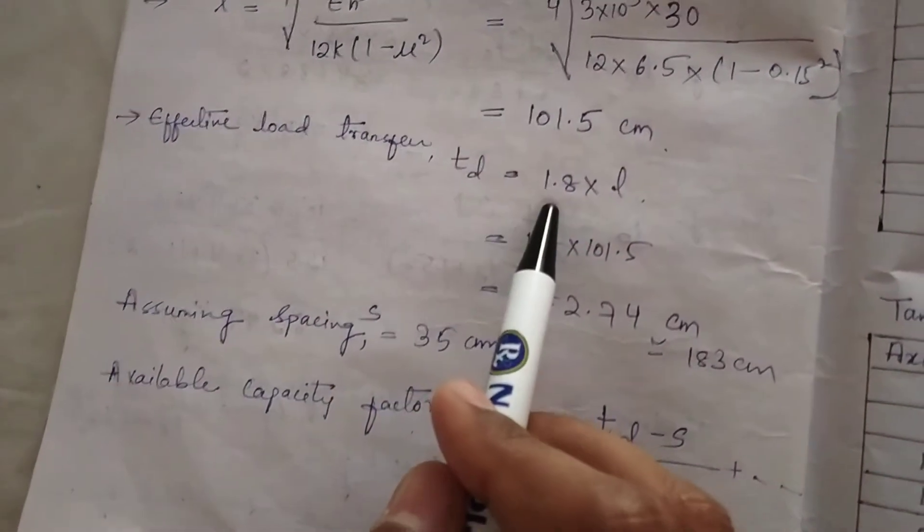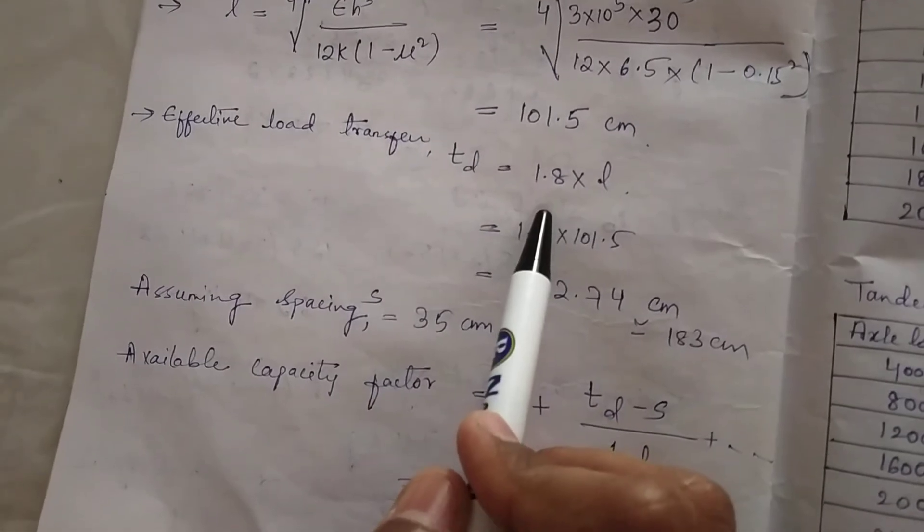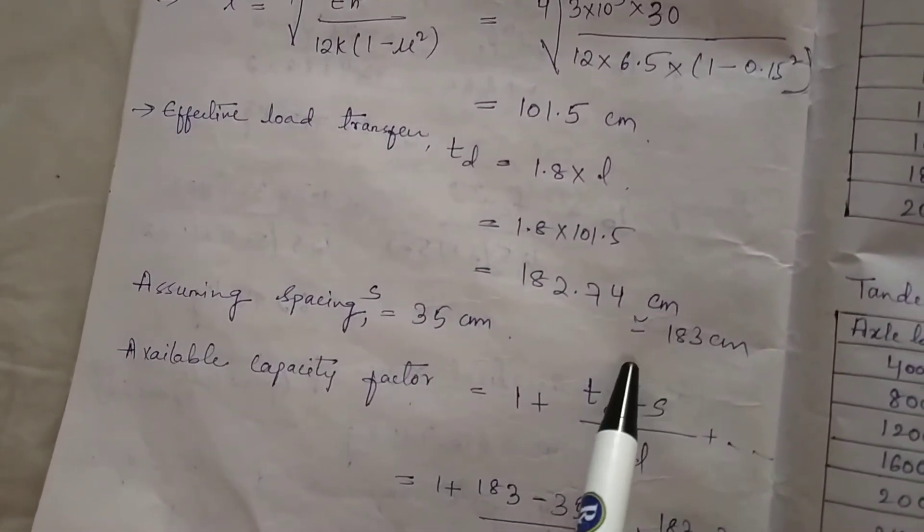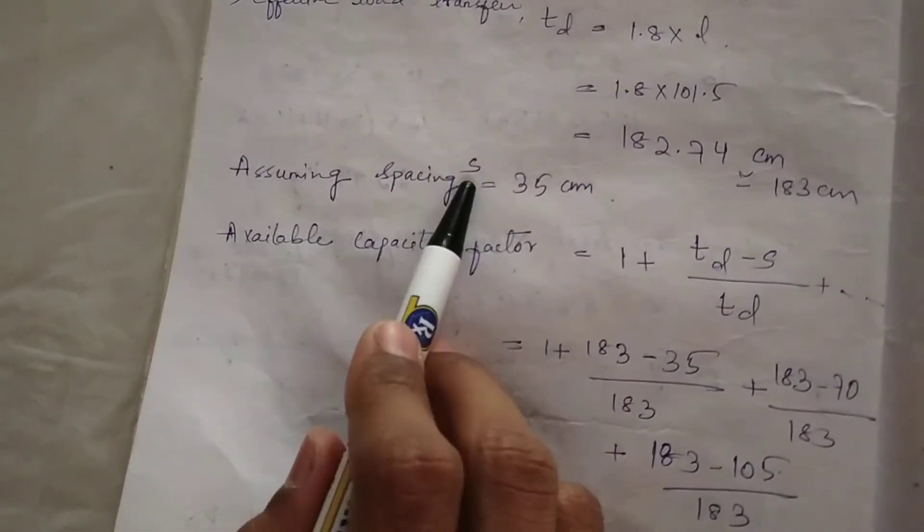Effective load transfer is calculated by the formula td = 1.8×l. We have calculated value for l, multiply it with the factor 1.8, we will get result in centimeters.